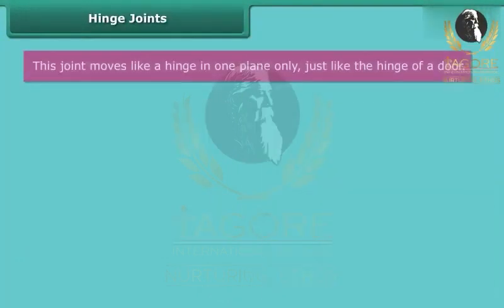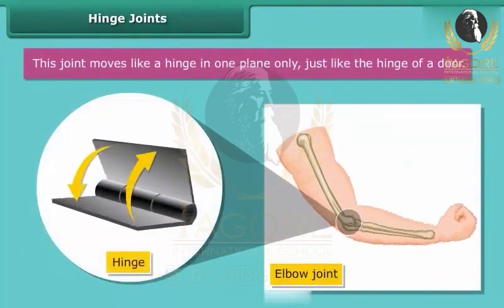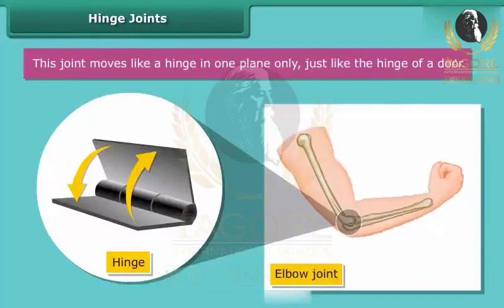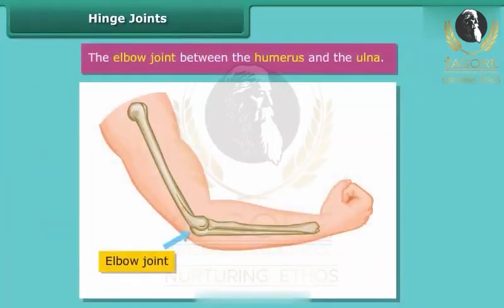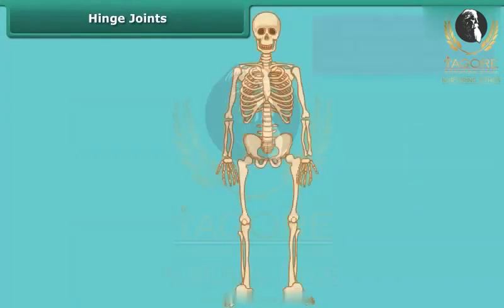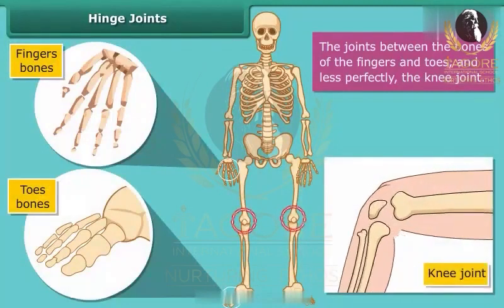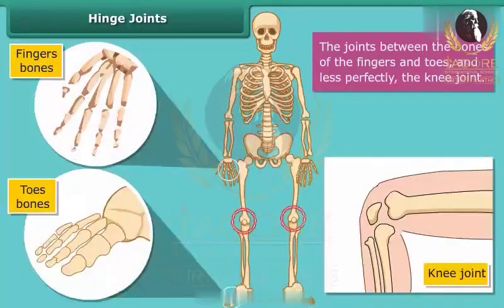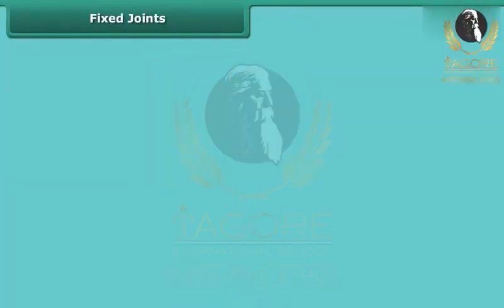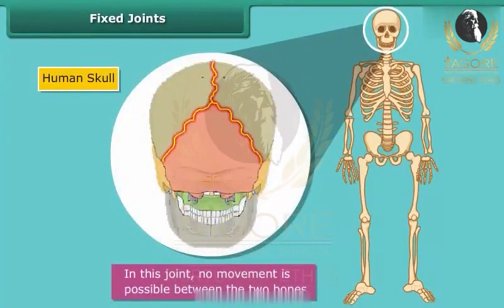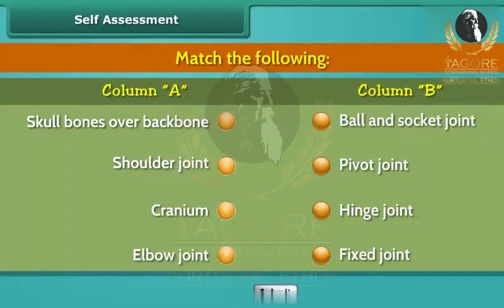Hinge joints move like a hinge in one plane only, just like the hinge of a door. The elbow joint between the humerus and the ulna, the joints between the bones of the fingers and toes, and the knee joint are examples of hinge joints. Hinge joints usually give sufficient power because there is less danger of twisting. In a fixed joint, no movement is possible between the two bones. The sutures between the bones of the skull are an example of a fixed joint.